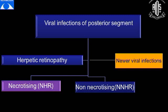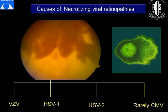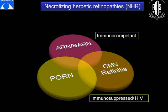These viral infections can be either herpetic retinopathy or non-viral infections. The update is that the herpetic retinopathies are now classified into necrotizing and non-necrotizing retinopathies. The necrotizing viral retinopathy is often due to VZV, HSV1, HSV2, or rarely a CMV virus. In the necrotizing herpetic retinopathies, we have the acute retinal necrosis and bilateral acute retinal necrosis, which occur in immunocompetent patients, and the progressive outer retinal necrosis and CMV retinitis, which occur in immunosuppressed patients and in patients with HIV.